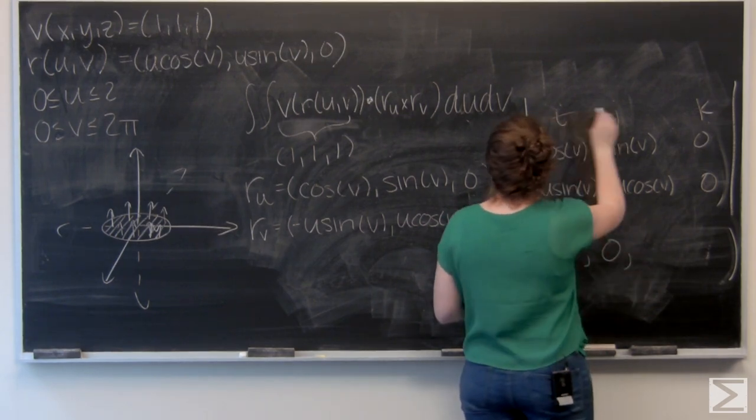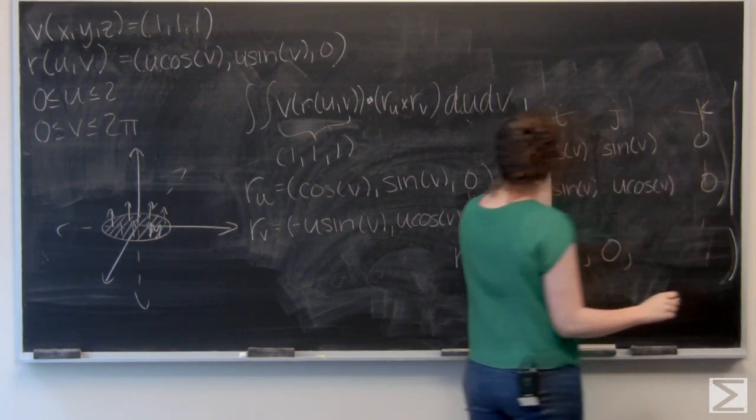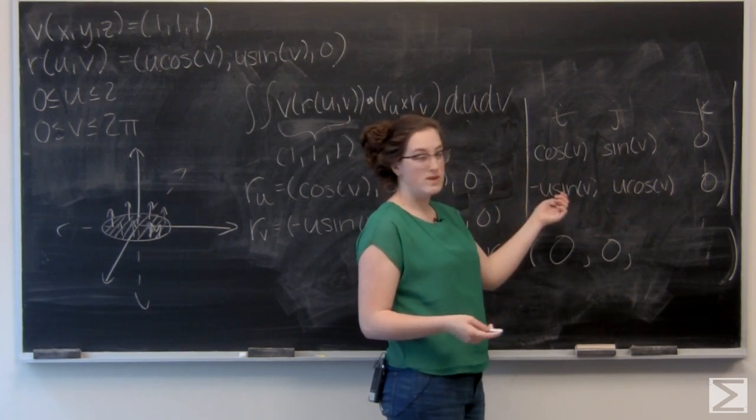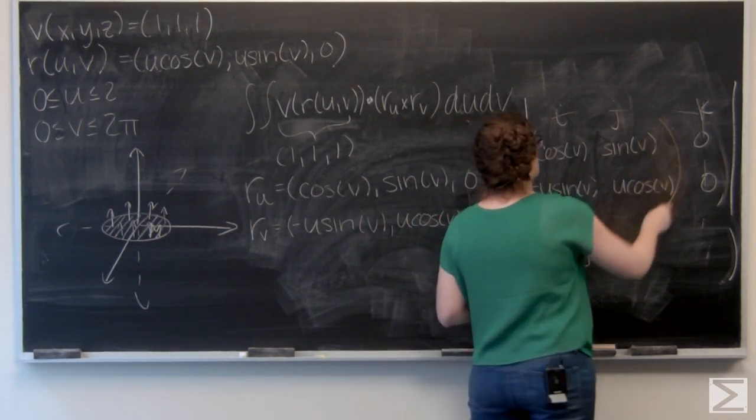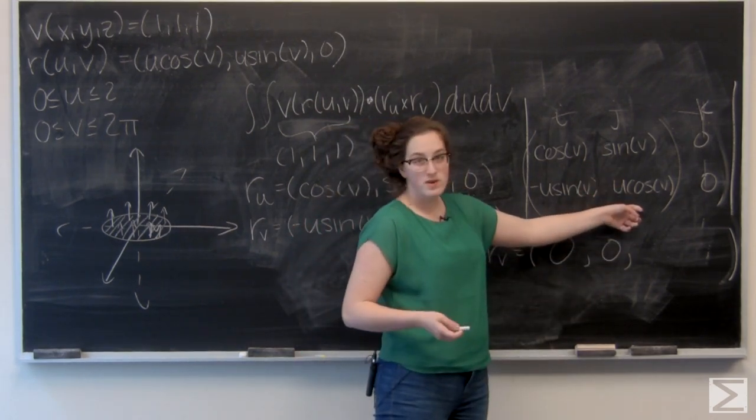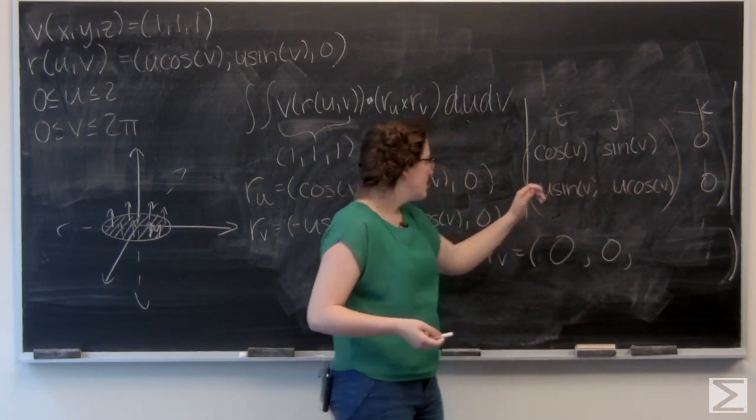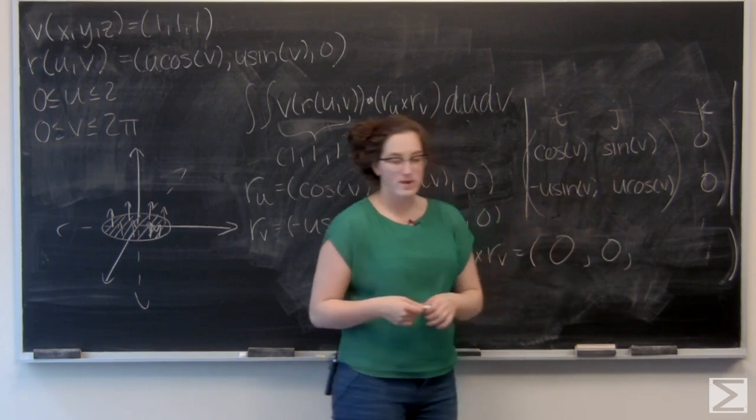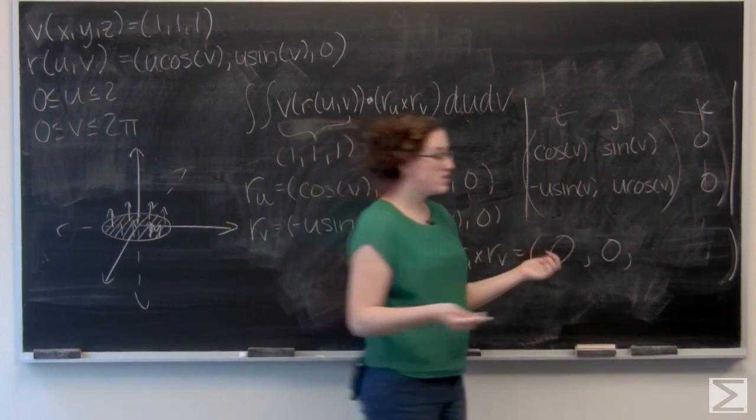Now for k, cut the top column, cut the rightmost row, and I've got a 2 by 2 matrix right here that I want to take the determinant of. So I've got u cosine squared v on the main diagonal, plus u sine squared v. So use my trig identity, and I'm just going to get u.